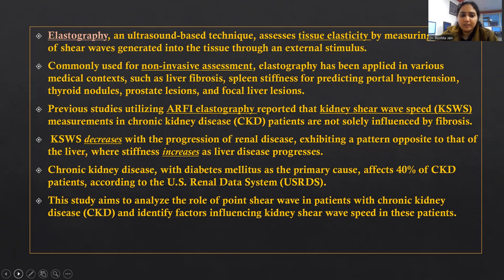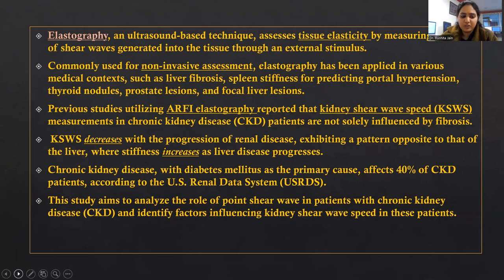Shear wave speed decreases with the progression of renal disease, exhibiting a pattern opposite to that of liver, where stiffness increases as liver disease progresses. Chronic kidney disease with diabetes mellitus as a primary cause affects 40% of CKD patients. This study aims to analyze the role of point shear wave elastography in CKD patients and identify factors influencing kidney shear wave speed in these patients.